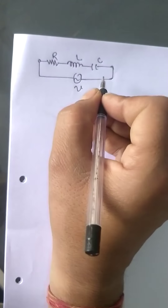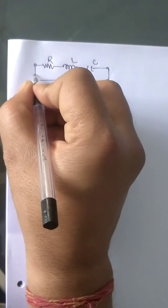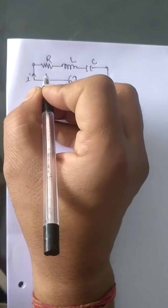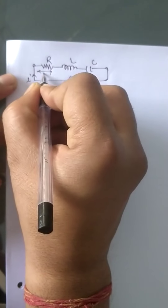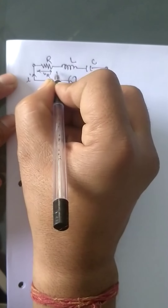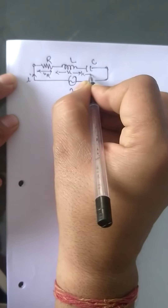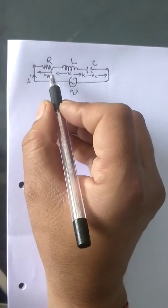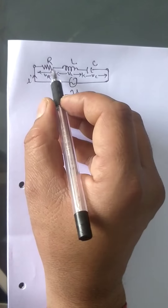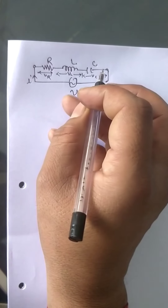As it is a series circuit, the current is the same throughout. We have understood that the voltage across resistance is Vr, voltage across inductor is Vl, and voltage across capacitor is Vc. Now let's look at their individual phasor diagrams for resistance, inductance, and capacitance.